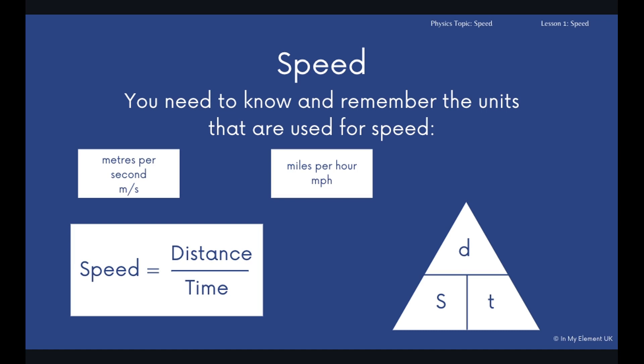You might have miles per hour, so that would mean the distance has been measured in miles and the time has been measured in hours. Be careful with hours because if it's 0.5 of an hour, obviously that's 30 minutes.